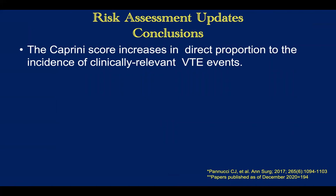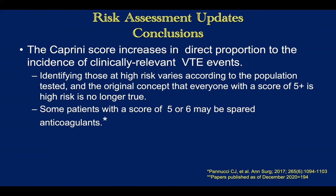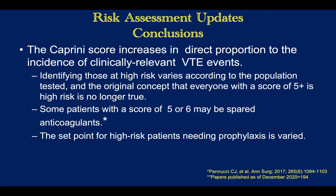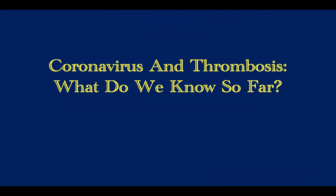In conclusion, the Caprini score increases in direct proportion to the incidence of clinically relevant VTE events — we've seen that from all over the world. The original concept that everybody with a score of five-plus is high risk is no longer true. Some patients with a score of five or six may be spared anticoagulants — that may be half the patients. Countries have adopted the Caprini score because it quickly divides people into three buckets: half or more not needing expensive anticoagulation, those at standard risk needing seven to ten days of prophylaxis, and a small group at very high risk needing extended prophylaxis. Studies have now identified a very high-risk group that may benefit from extended prophylaxis.